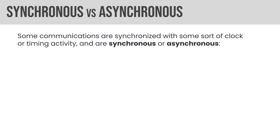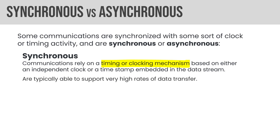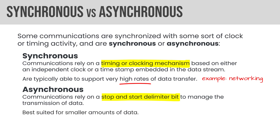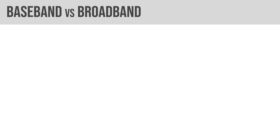Synchronous versus asynchronous: synchronous communications rely on timing or a clock mechanism — either an independent clock or a timestamp embedded in the data stream. They're typically able to support very high rates of data transfer. A good example is networking. Asynchronous relies on a stop and start delimiter bit to manage data transmission. It's best suited for smaller amounts of data — a good example is the public switched telephone network, PSTN, and modems.